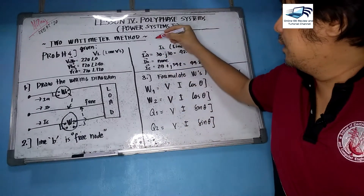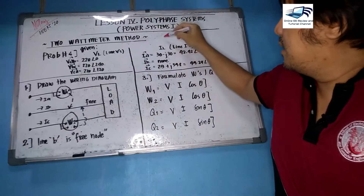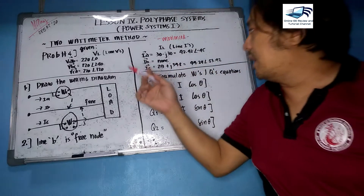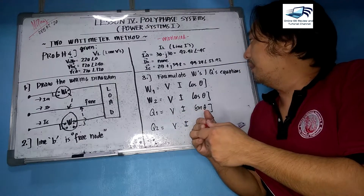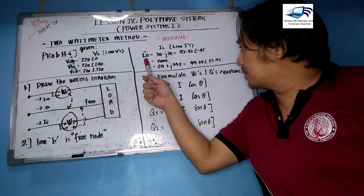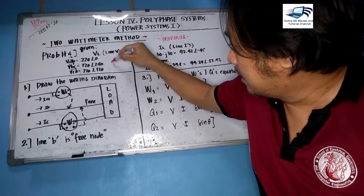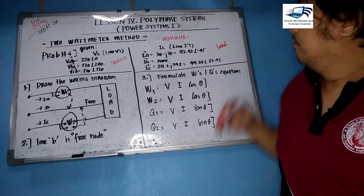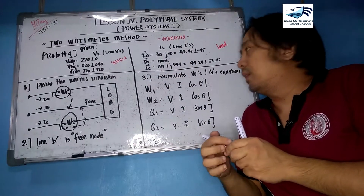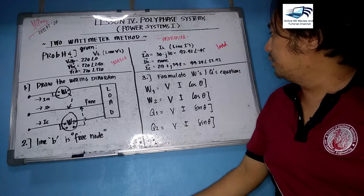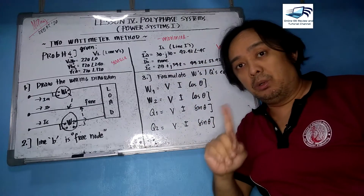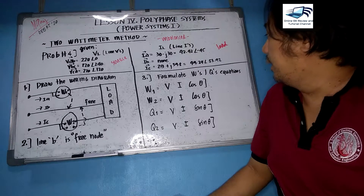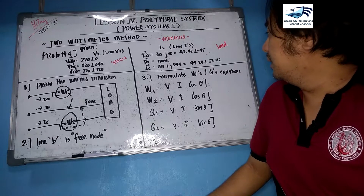This is an unbalanced system. You can see already why it is unbalanced because of the currents flowing on the system. Although the source is balanced in terms of the line voltages, the load is not. In polar form, 30−j30 gives 42.42∠−45°. Ib is not zero. Ic equals 29+j39.8, which is equal to 49.24∠53.92°.